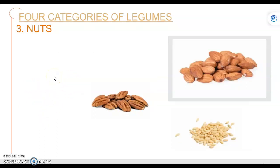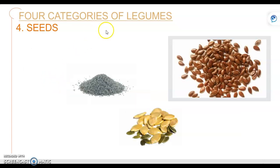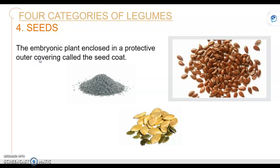The next category of legumes is nuts, and this is exactly what you think it is — it's nuts. A nut is the fruit composed of a hard shell and a seed, which is generally edible. And then the last category of legumes is seeds, which is the embryonic plant enclosed in a protective outer coating called the seed coat.